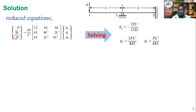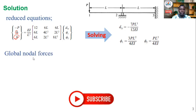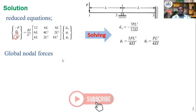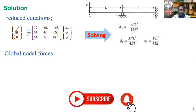The rotation θ1 at node one is three-quarters PL² over EI, and θ2, the rotation at node two, is as shown. Next we need to get the global forces for our structure at each of the nodes: F1y, F2y, F3y, and the moments.